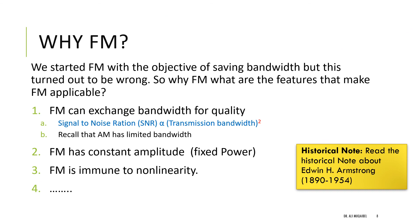Finally, why would someone use FM if it requires much more bandwidth than AM? First, FM allows you to exchange bandwidth for quality: the signal-to-noise ratio is proportional to the square of the transmitted bandwidth, so doubling the bandwidth gives four times SNR improvement — something not possible with AM. Second, FM signals have constant amplitude, meaning fixed power independent of the message. Third, FM signals are immune to non-linearity. These are the key advantages of FM.